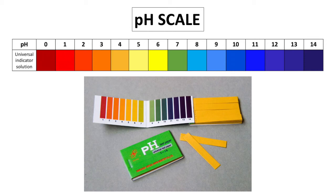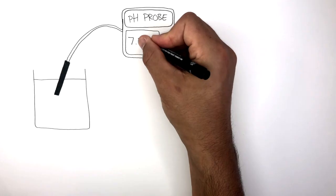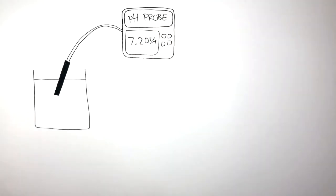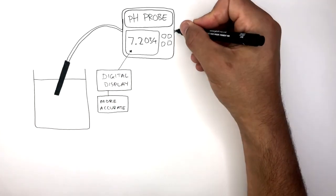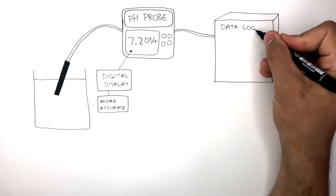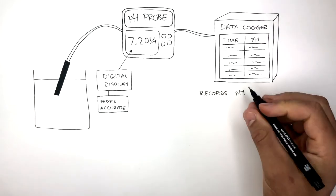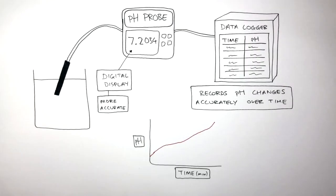So an alternative is using a pH probe or pH meter which gives you exact data on a digital display. This digital display is much more accurate and the pH probe or pH meter can be connected to a data logger which records pH changes accurately over time. We can then use a graph to interpret the data where time is on the x-axis and pH is on the y-axis.